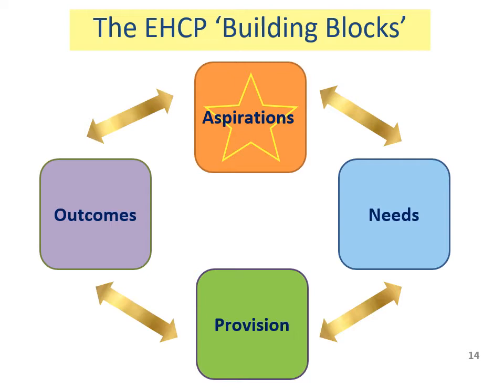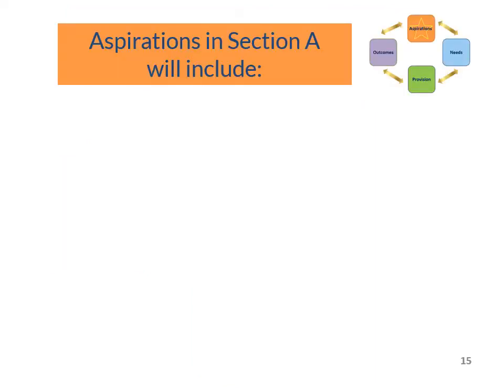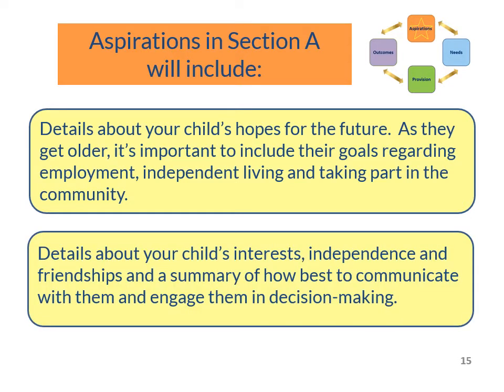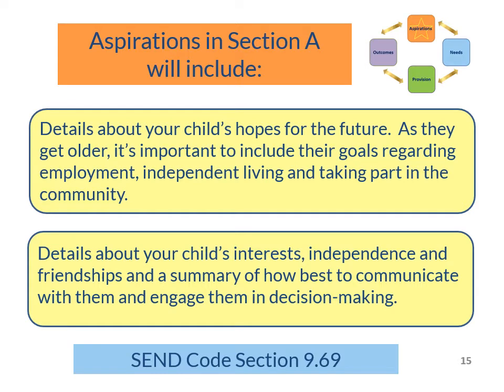Your child's aspirations will be in Section A of the EHC plan. Section A will also include goals regarding employment, independent living and taking part in their community. This section will also give details about your child's interests, independence and friendships, and a summary of how best to communicate with them and engage them in decision making.